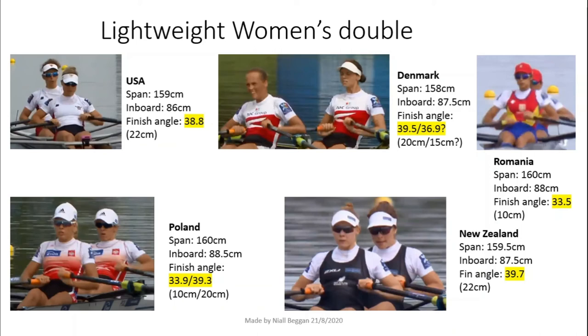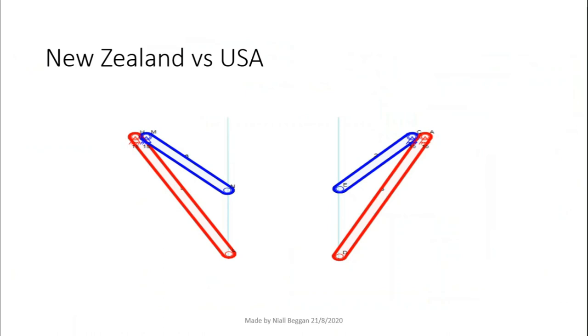If we compare the USA boat to the New Zealand boat, you might wonder why the USA have a smaller finish angle if they have a smaller inboard, a smaller span, and the same gap. Why isn't their finish angle bigger? The reason is, with a smaller inboard, you need to finish wider to have the same angle. Imagine sitting at the finish position and sliding your hands 2cm down your oar handles. The angle has not changed, but with a smaller inboard, your hands are further apart. To counteract this, normally the span is reduced as well. For the USA crew, they have reduced their inboard more than they reduced their span, when compared to the New Zealand crew. That is why the USA has a smaller finish angle, despite finishing at the same width with a smaller span and inboard.